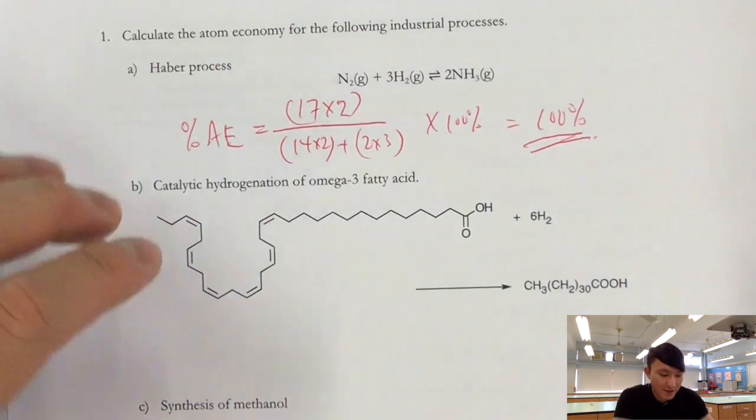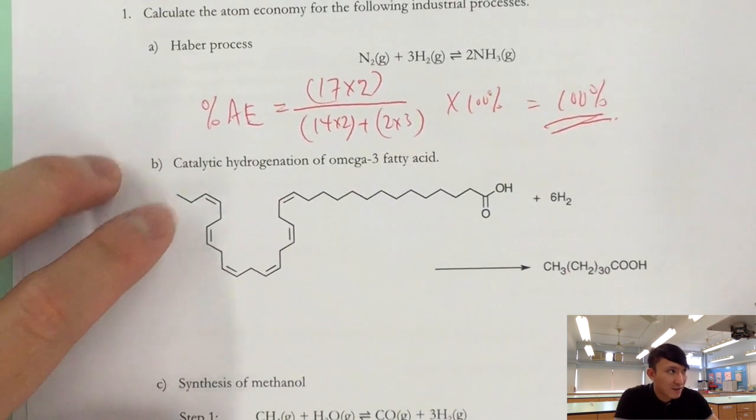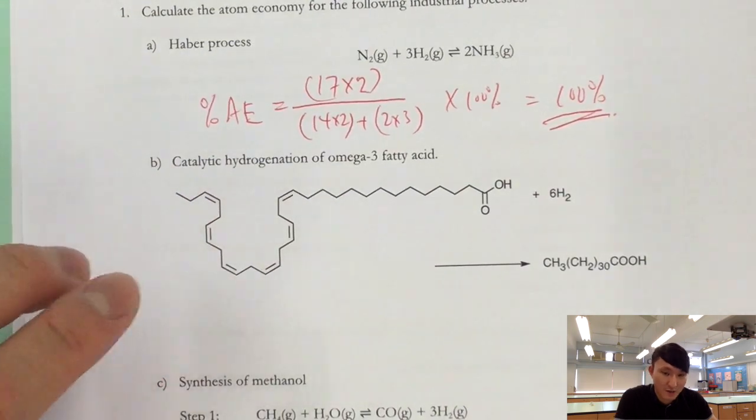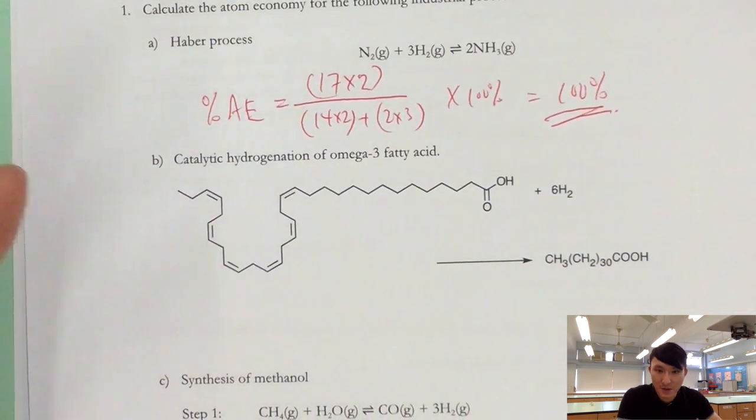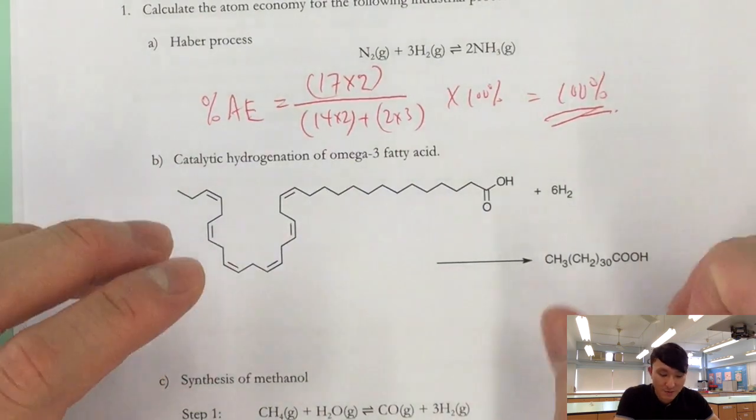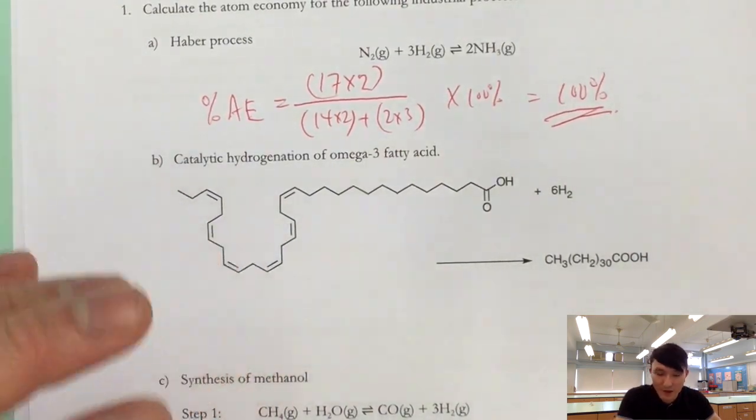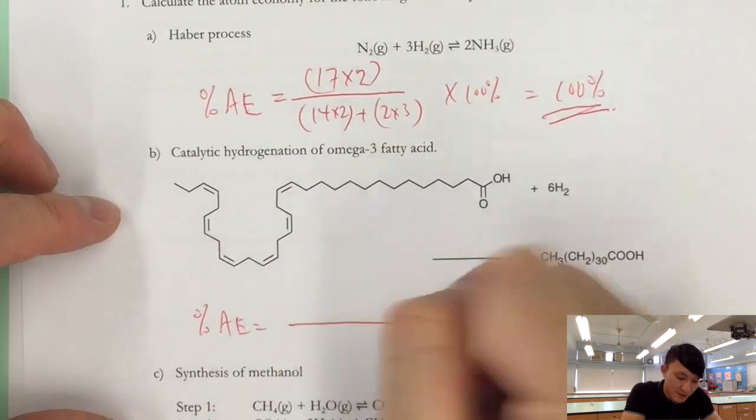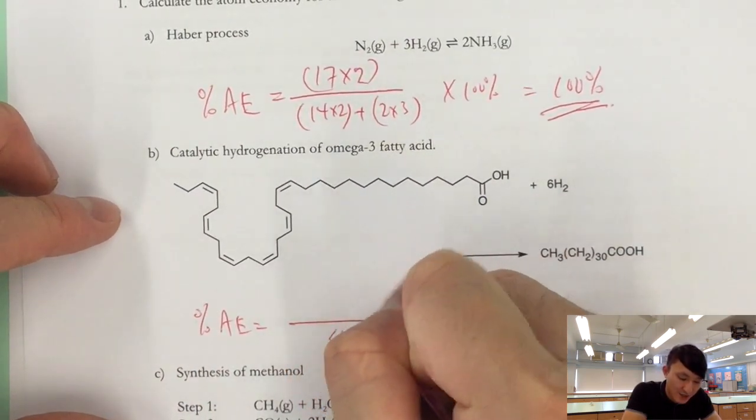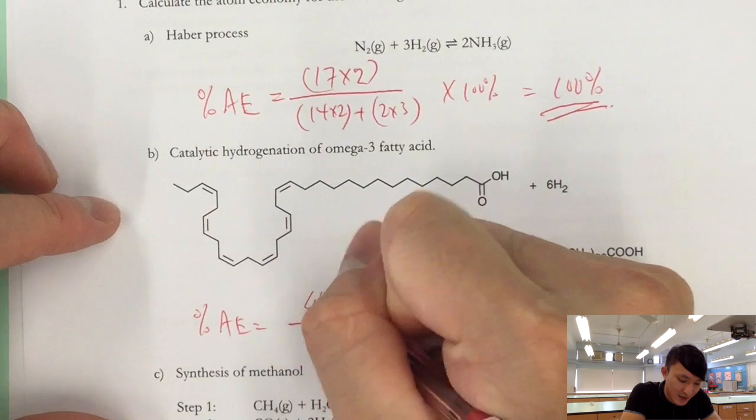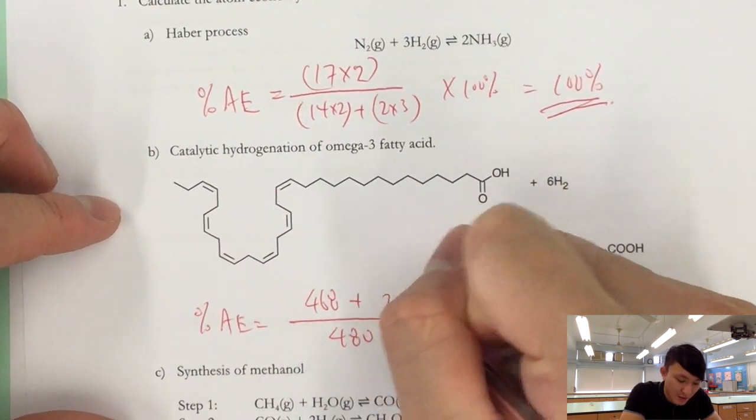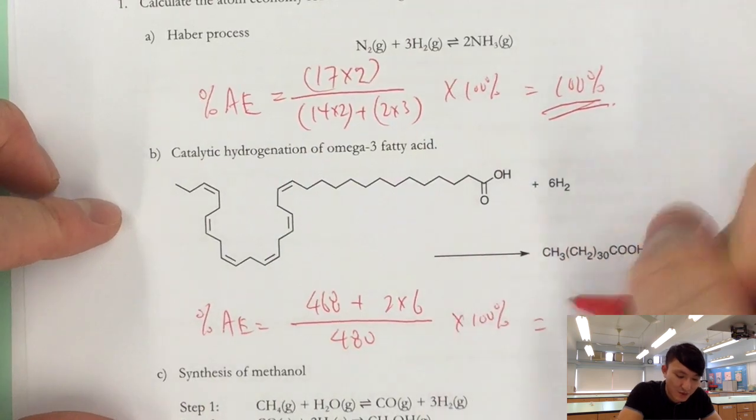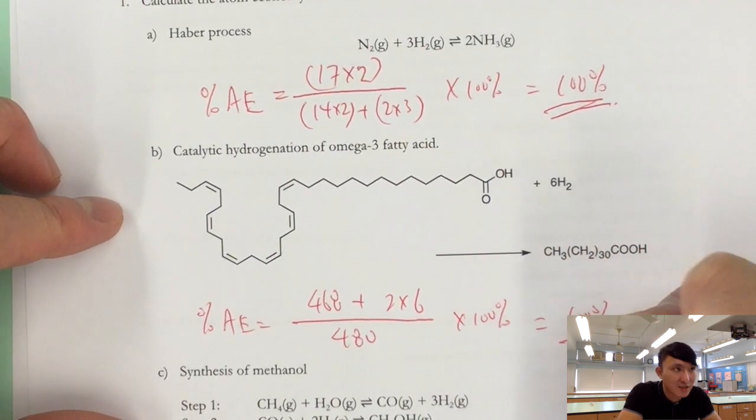Now let's check. So here, catalytic hydrogenation of omega-3 fatty acid. Again, if you are smart, this one must be 100% because you have one product only. But still, we want to fit in some steps. So percentage atom economy equals to, this one is 480, this one is 468, this one is 2 times 6, so times 100%, which gives you, again, 100%.